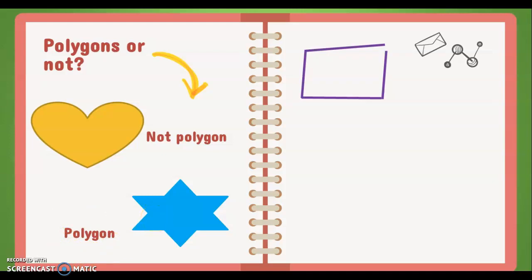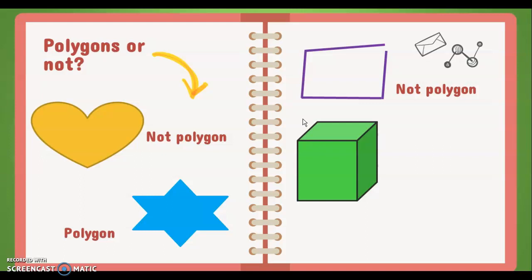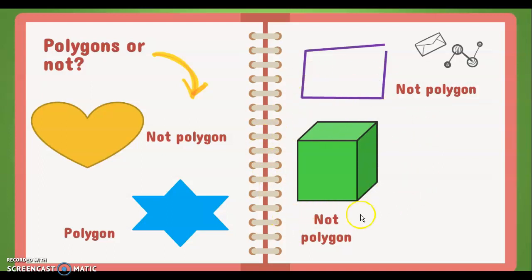Number three: yes, this is not a polygon. Why? It's not closed — as you can see, these two line segments here are not joined together. Number four: this one is also not a polygon. It may be closed and made up of plane figures, however this as a whole is not a plane figure — it is a three-dimensional object.